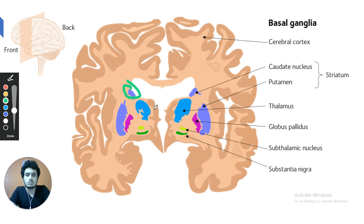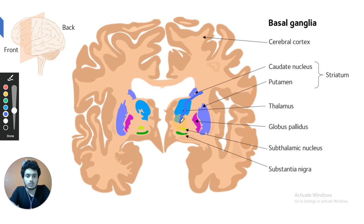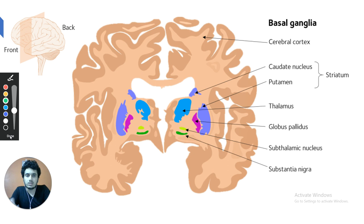To summarize: just lateral to the lateral ventricle is the caudate nucleus; just lateral to the third ventricle is the thalamus; below the thalamus are the subthalamic nucleus and substantia nigra. Lateral to both the thalamus and caudate nucleus is the lentiform nucleus with globus pallidus medially and putamen laterally. The boomerang-shaped white matter fibers between caudate and thalamus medially and globus pallidus laterally form the internal capsule.